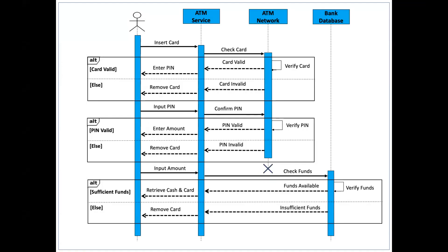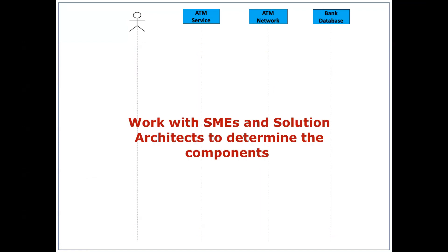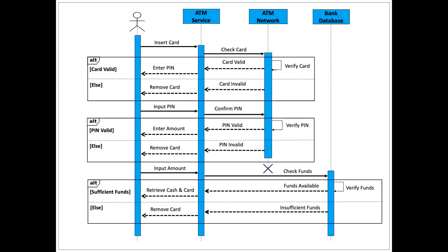Now let's go through an example of a sequence diagram for an ATM system. First, we'll identify the user and the key components within the ATM system. The customer inserts the ATM card. The ATM service passes the card info to the ATM network to check the card, which creates the ATM network activation box. The ATM network verifies the card using a reflexive message, introducing an alternative frame since there are two possible outcomes. If the card is valid, the ATM network sends the card valid status to the ATM service, which requests the PIN from the customer. If the card is invalid, the ATM network sends the card invalid status, prompting the customer to remove the card.